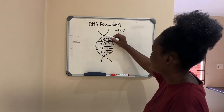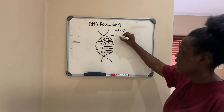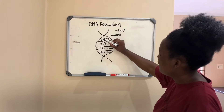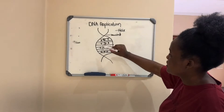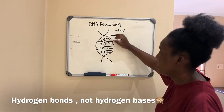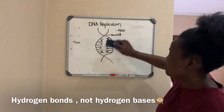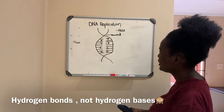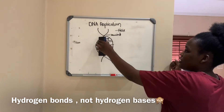When DNA replication happens, the first thing that occurs is that the helix unwinds. The thing that binds the two nitrogenous base pairs together is hydrogen bonds, so the hydrogen bonds are going to break. When the hydrogen bonds break, the strand is left unwound — so now you have two separate strands.